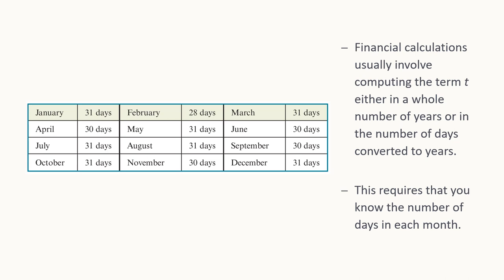Some financial calculations in the homework will involve computing the term T as a whole number in years or as a number of days converted to years. If the problem gives a date range — say February to August — you'll need to count the days in each month. Here's a table showing the number of days in each month. On the test, I won't require you to memorize this — I'll just tell you how many days it is — but there are a couple of homework problems where you'll need to count them up on your own.